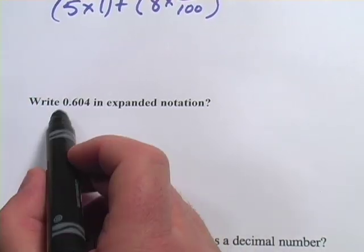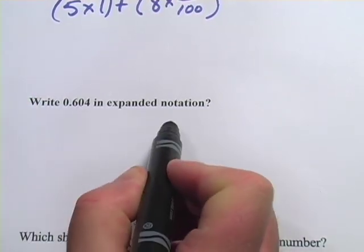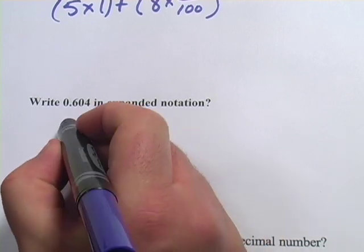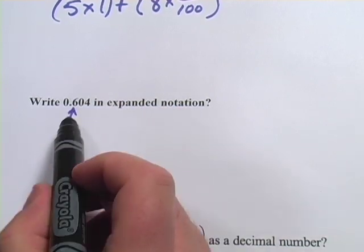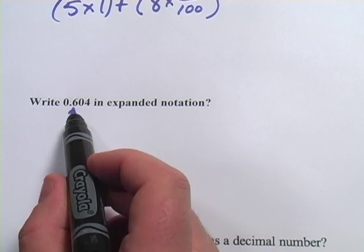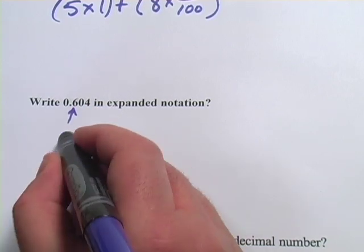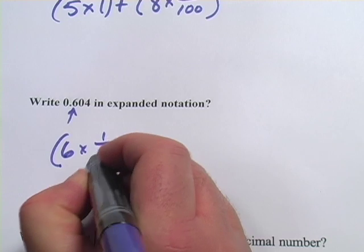This one says write 0.604 in expanded notation. Now our first number, that's not a 0 here, is in the tenths place, and it's a 6. So we'd write that as 6 times one tenth.